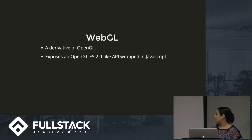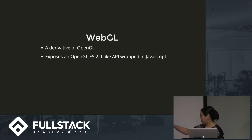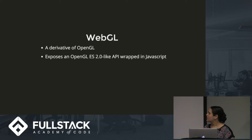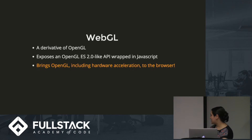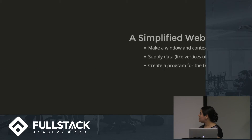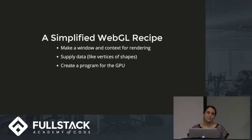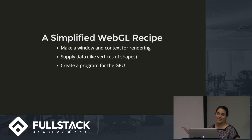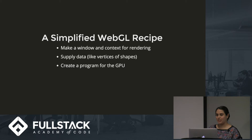That's where WebGL comes in. WebGL is a derivative of OpenGL — it comes from OpenGL ES 2.0 — and it's an API wrapped in JavaScript. It gives us OpenGL in the browser with hardware acceleration. I found that implementing WebGL was pretty involved, so this is my simplified recipe for WebGL.